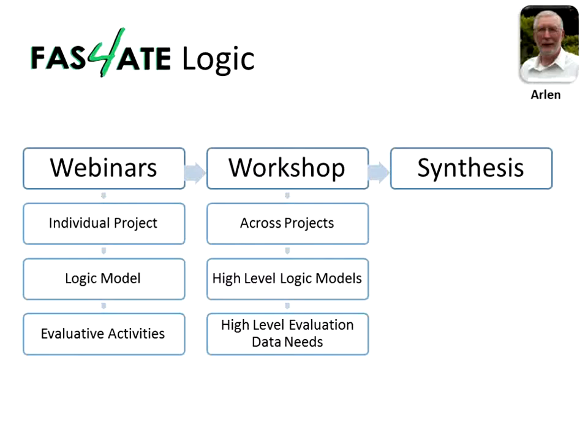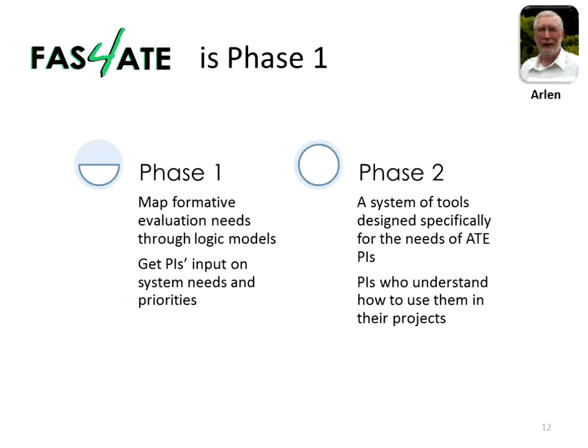Following the workshop, we'll draw these ideas together and provide that synthesis to you. These activities, which comprise FAST4ATE, are the first phase of an overall effort. Phase 2, which is beyond our current workshop grant, embodies our long-term vision to create a system of tools designed specifically for ATE PIs to help them harness the feedback they need for learning and day-to-day decision-making. We believe the existence of a data structure or system and specific tools will make the collection and use of critical evaluation data feasible for all NSF ATE projects. The system we've envisioned will involve resources including a cloud database and tools to enable data entry through multiple interfaces, including mobile applications. ATE projects and center staff who use the resources will be able to collect and use real-time data for formative purposes and roll it up for annual NSF reporting.